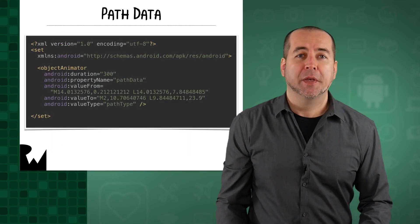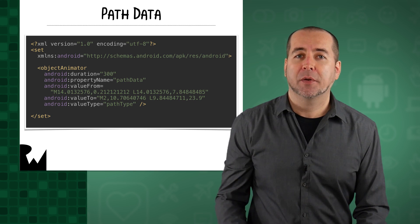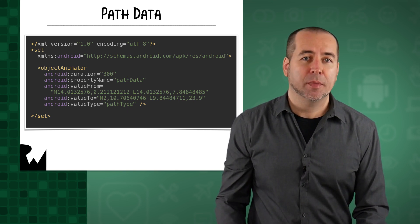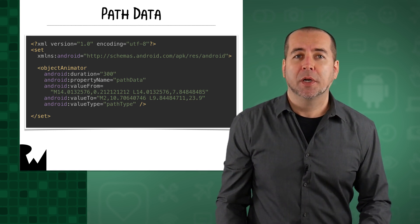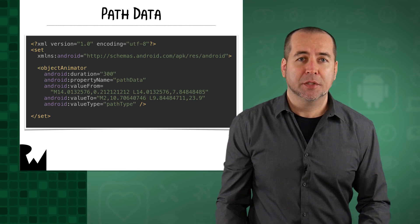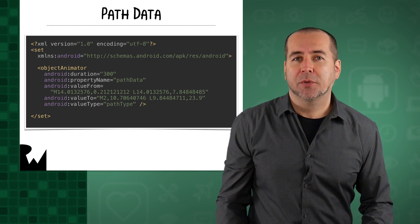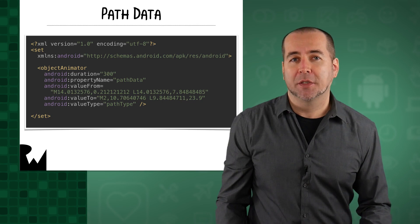When working with animated vector drawables, you'll usually need to work with a team member that's skilled in working with the various vector image tools and that can help you define the associated animations. The starter project includes a number of these morphing animations that we'll use to take a plus sign and morph it into a check mark. Let's see how to create an animated vector drawable with these morphing animations now.